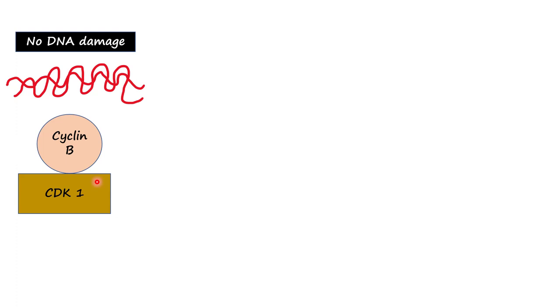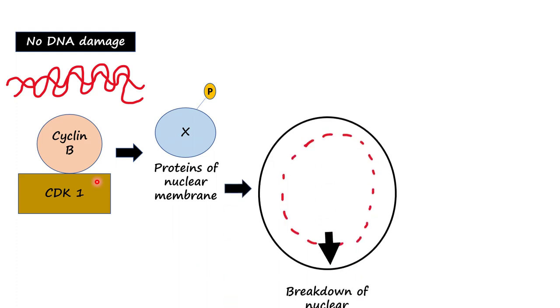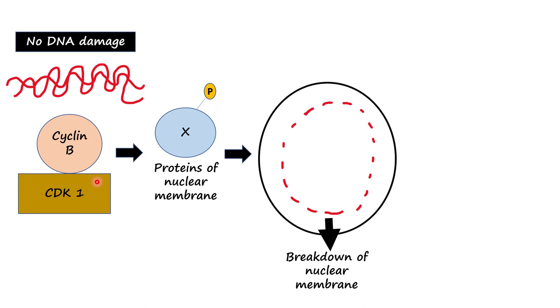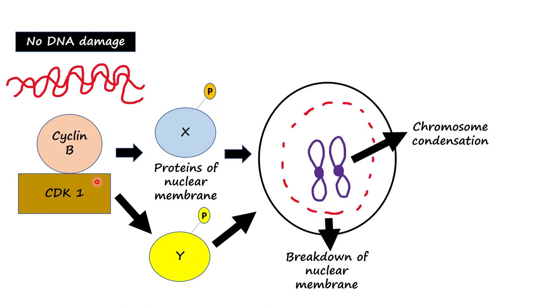This complex phosphorylates different proteins in the nuclear envelope, resulting in its breakdown. It also phosphorylates certain proteins which promote chromosome condensation and other M phase events.